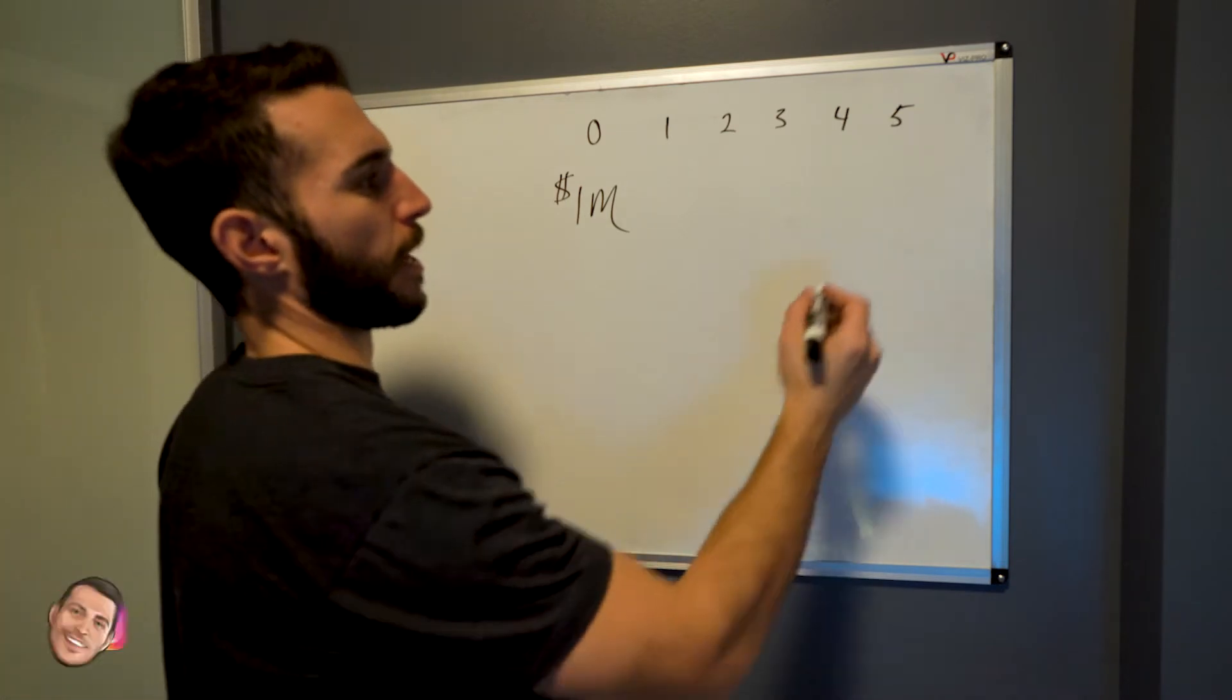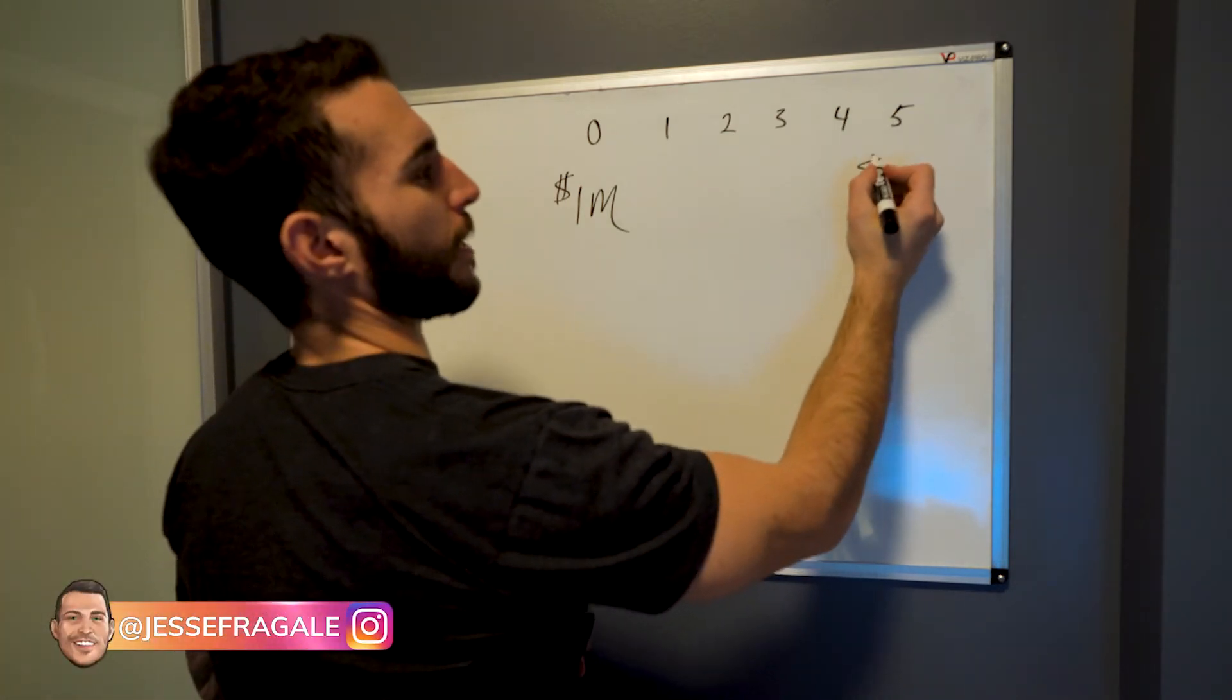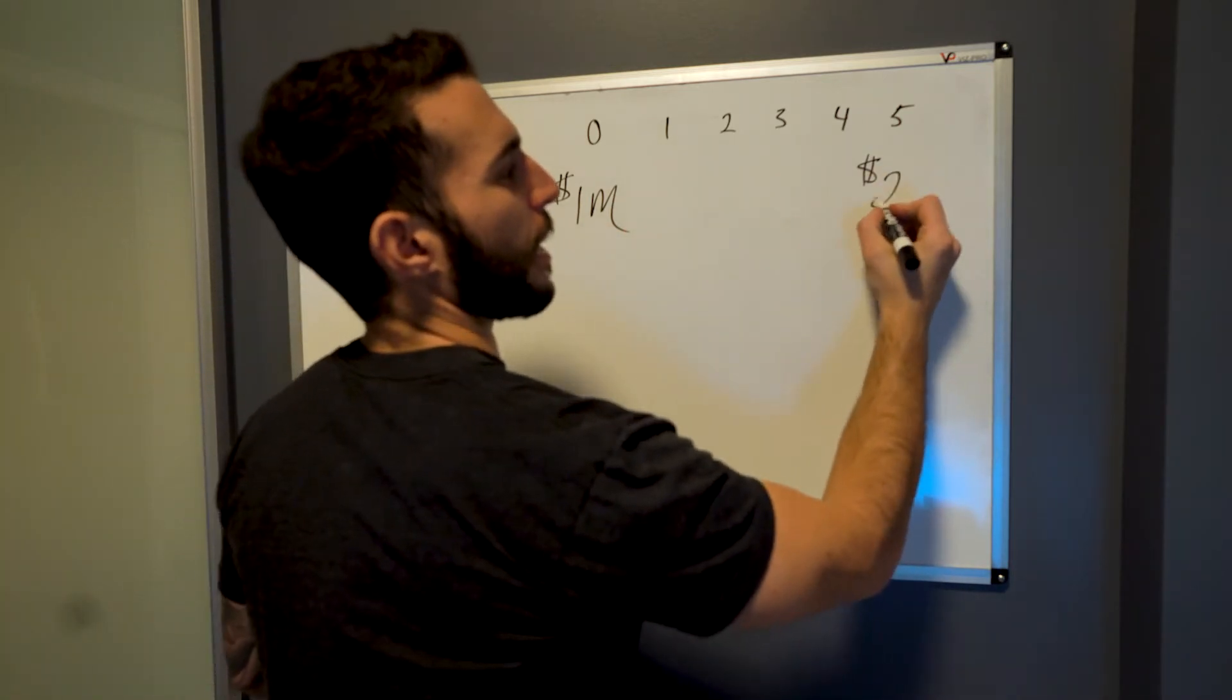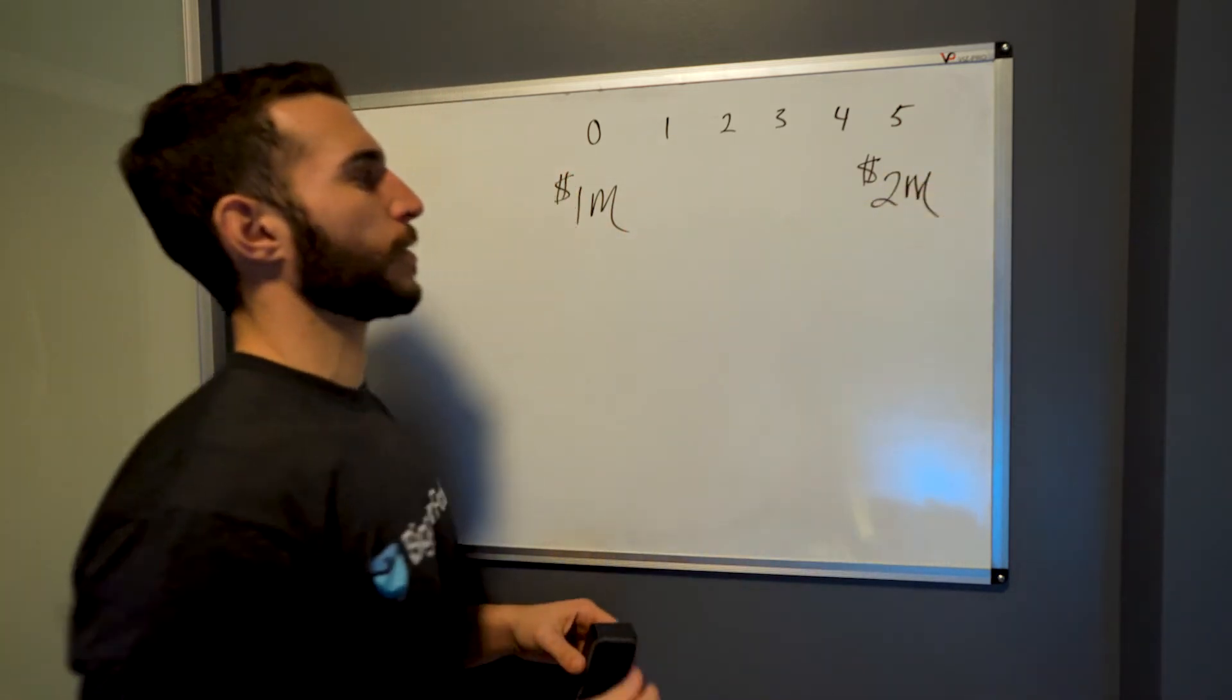That's our timeline, poorly drawn timeline. Now to keep the numbers simple, I'm going to do a sale price here at $2 million.